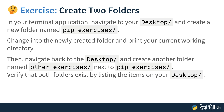Here is way more text on the slide than the former exercise, so it's a bit more work to do. In your terminal application, navigate to your desktop and create a new folder named pip_exercises. Then change into the newly created folder and print your current working directory. After that, navigate back to the desktop folder and create another folder named other_exercises. Verify that both folders exist by listing the items on your desktop.